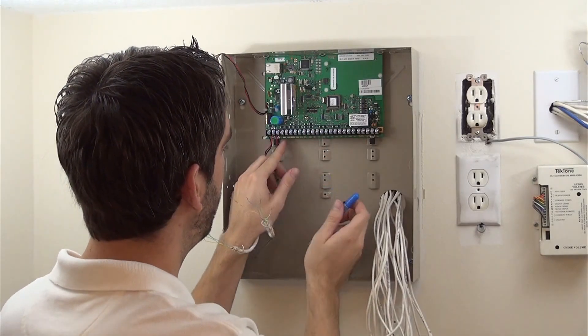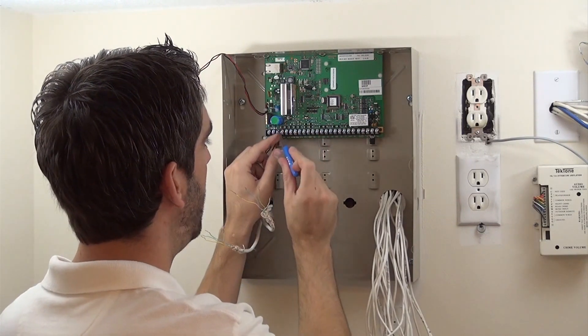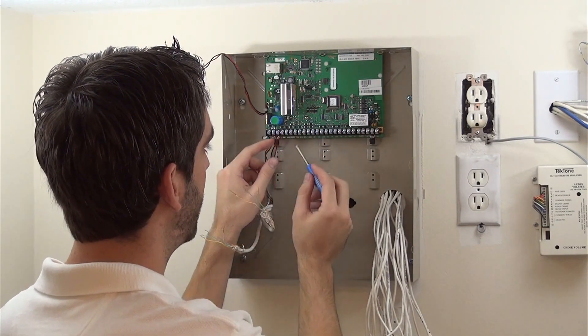So on the board here we've got ground, aux power, green, and yellow, which is negative power, positive power, data in, data out.